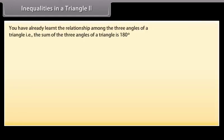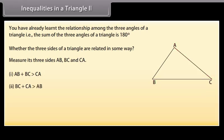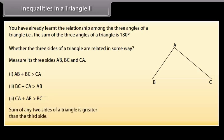You have already learned that the sum of the three angles of a triangle is 180 degrees. We shall now study whether the three sides of a triangle are related in some way. Draw a triangle ABC and measure its three sides AB, BC and CA. We observe that: (1) AB plus BC is greater than CA; (2) BC plus CA is greater than AB; and (3) CA plus AB is greater than BC. Thus, we conclude that the sum of any two sides of a triangle is greater than the third side.